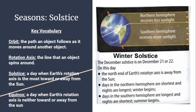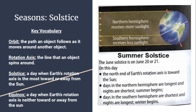On the summer solstice, the northern hemisphere is tilted towards the sunlight. This creates the longest day of the year — the most hours of sunlight. It occurs on June 20th or 21st, and it is summer in the northern hemisphere and winter in the southern hemisphere.